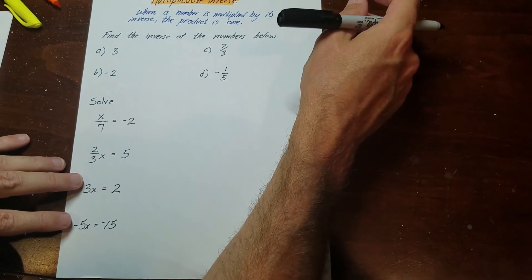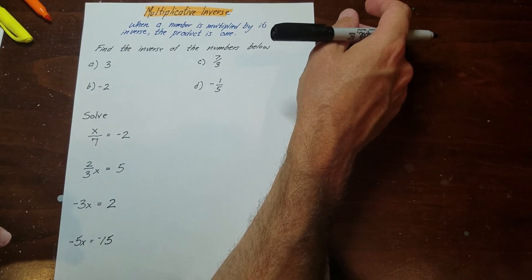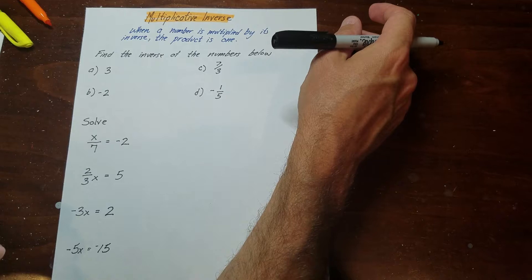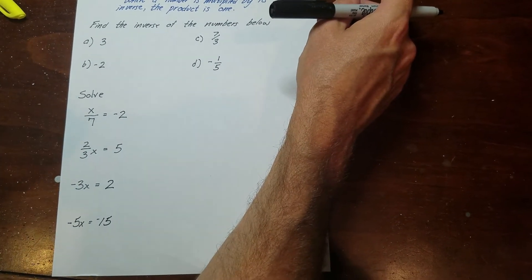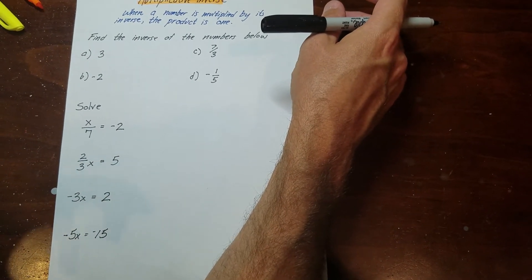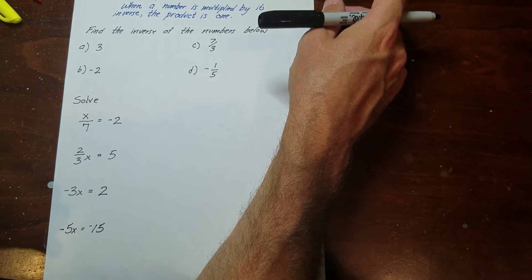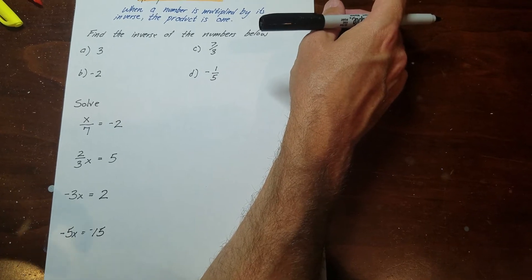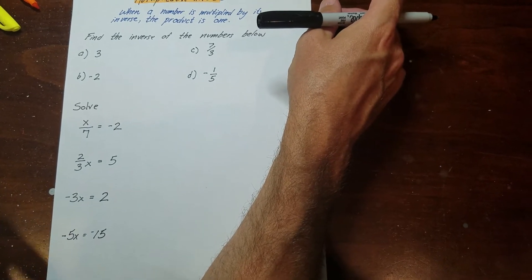This is the second method of solving equations: the multiplicative inverse. Between this and the additive inverse, that's pretty much most of what you're using when you're solving equations. So let's talk about what the multiplicative inverse is.